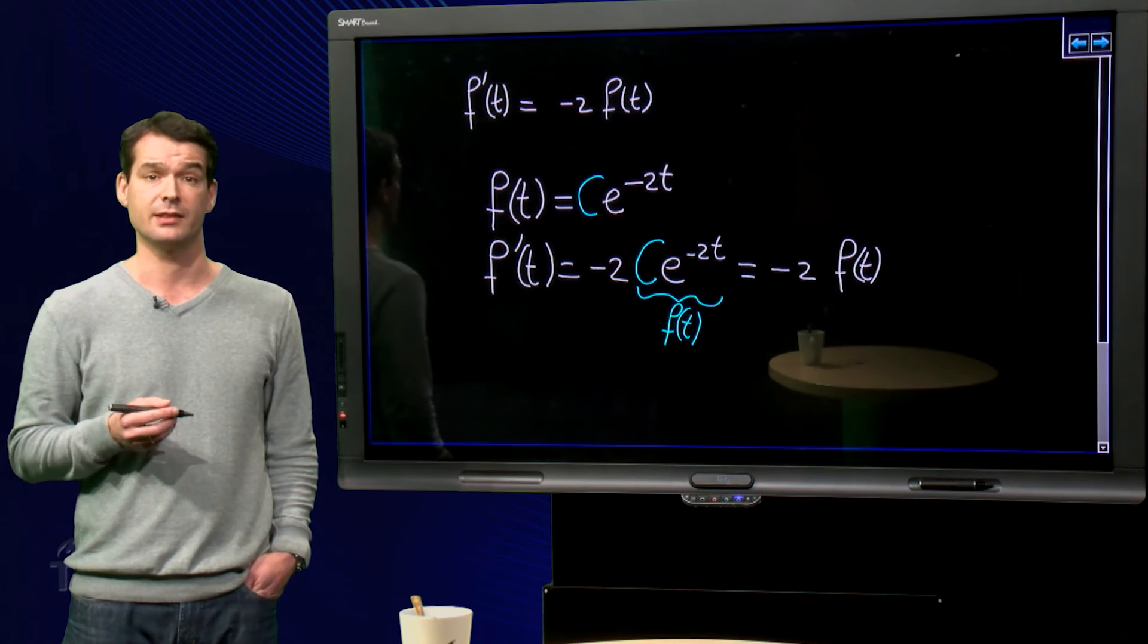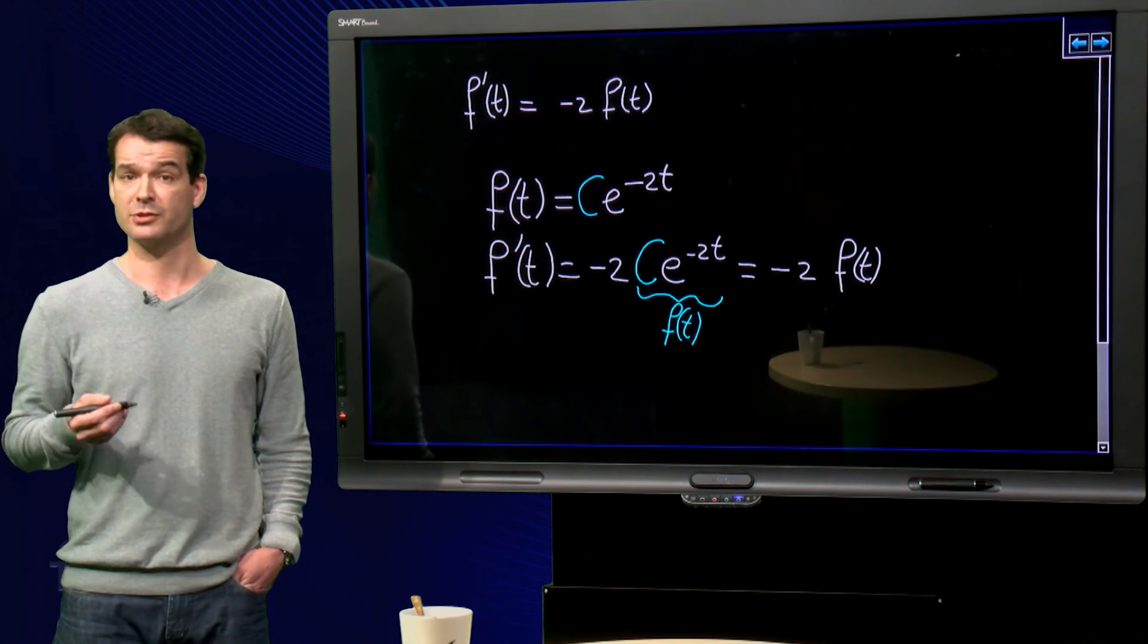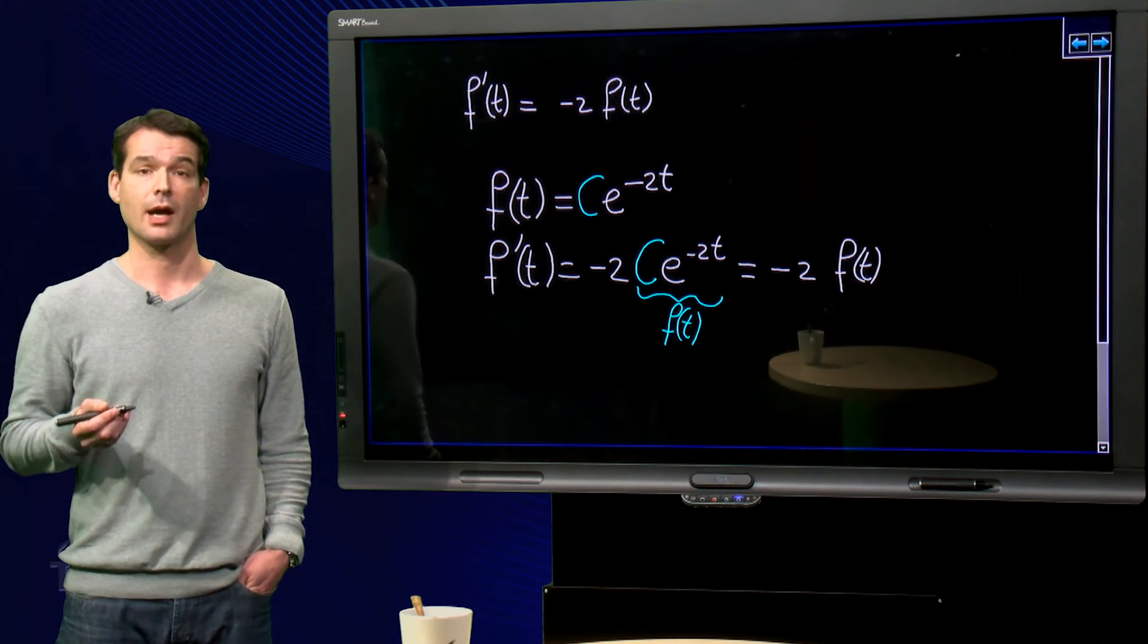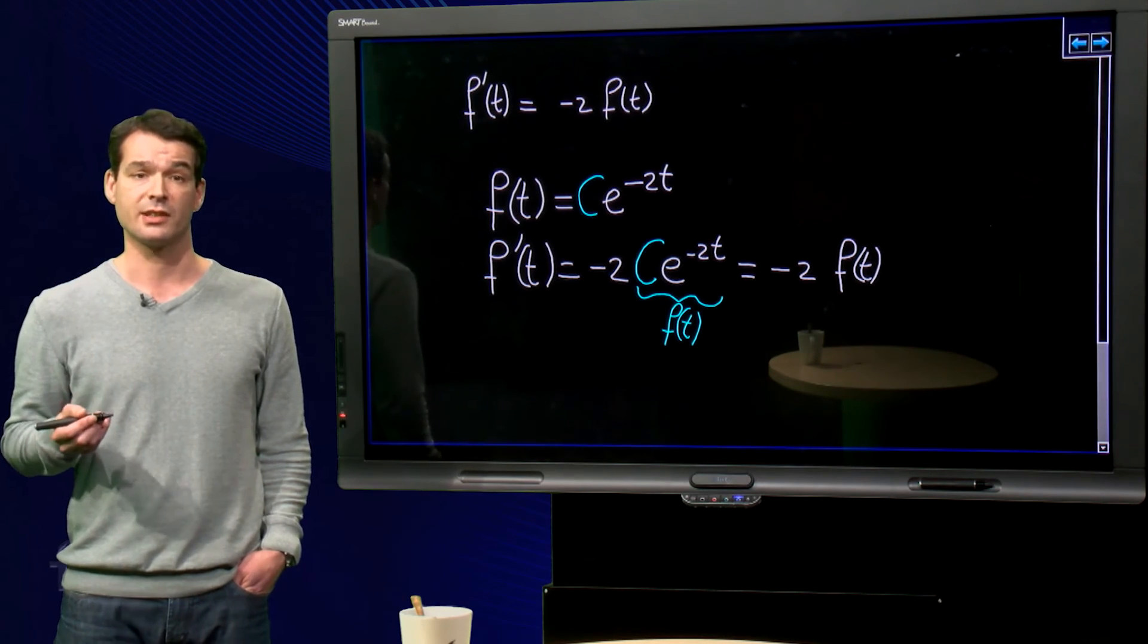If the room temperature is 20 degrees, then the difference is 80 minus 20 is equal to 60 degrees. So at t equals 0, the value of f should be 60.